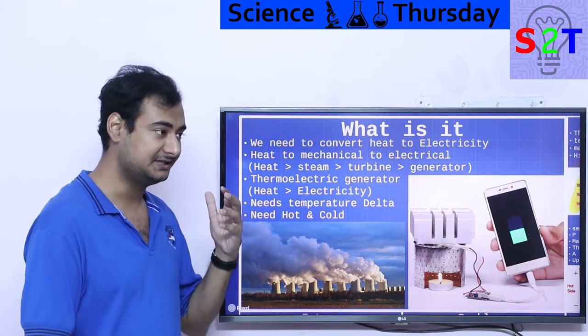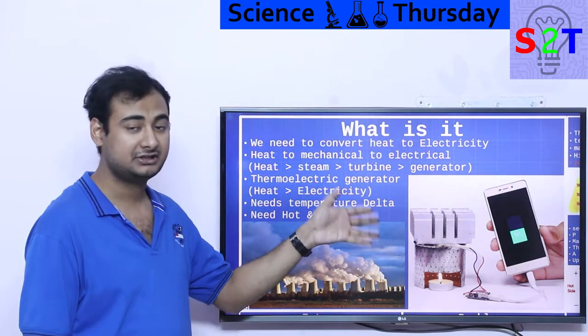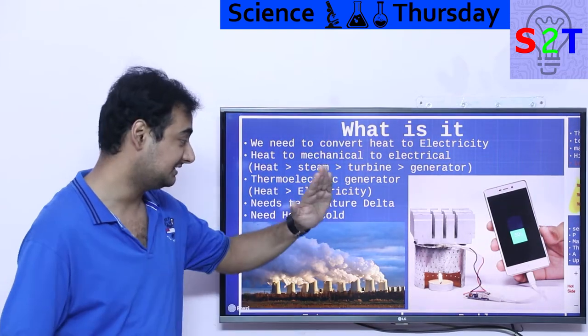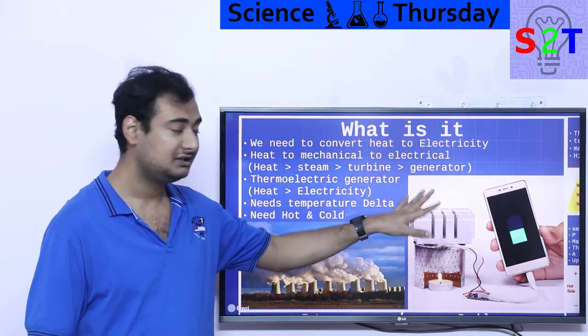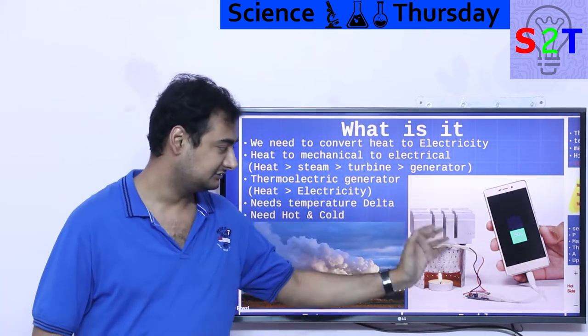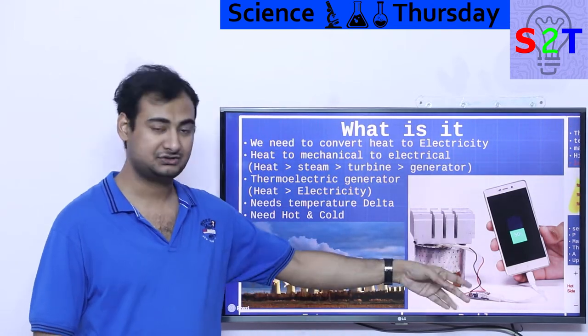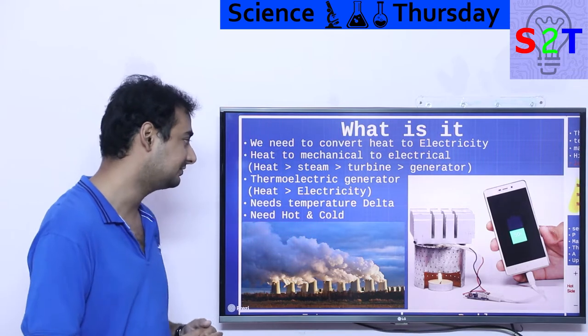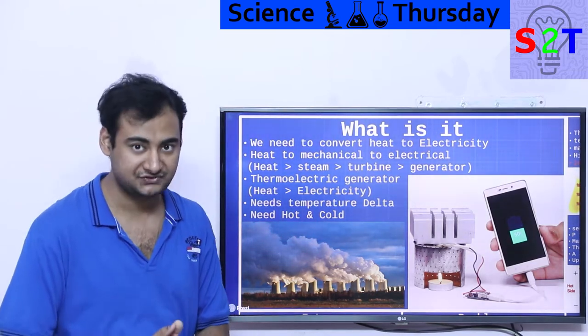So thermoelectric generators, on the other hand, are basically you take heat, you give it a temperature delta. That's it. It's almost like magic. Basically you have heat of a candle, cold side of ambient air, done. You just get electricity out of air. And this chip is basically a boost converter, so voltage is kind of low so they can boost the voltage. So reality is basically one step conversion process.